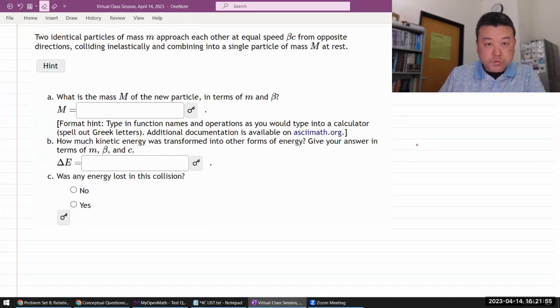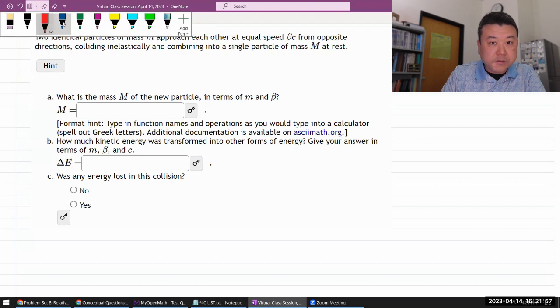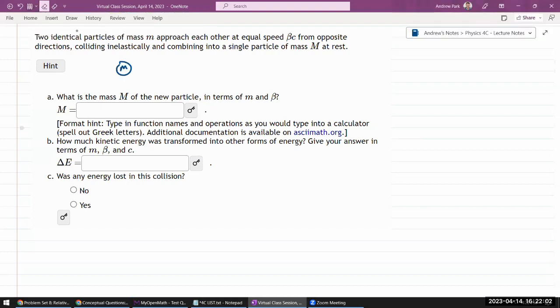So this question says two identical particles of some mass approach each other at equal speed. Okay, it's using letter beta. I like it. That's probably why I wrote it that way. Because these are the symbols that we use.